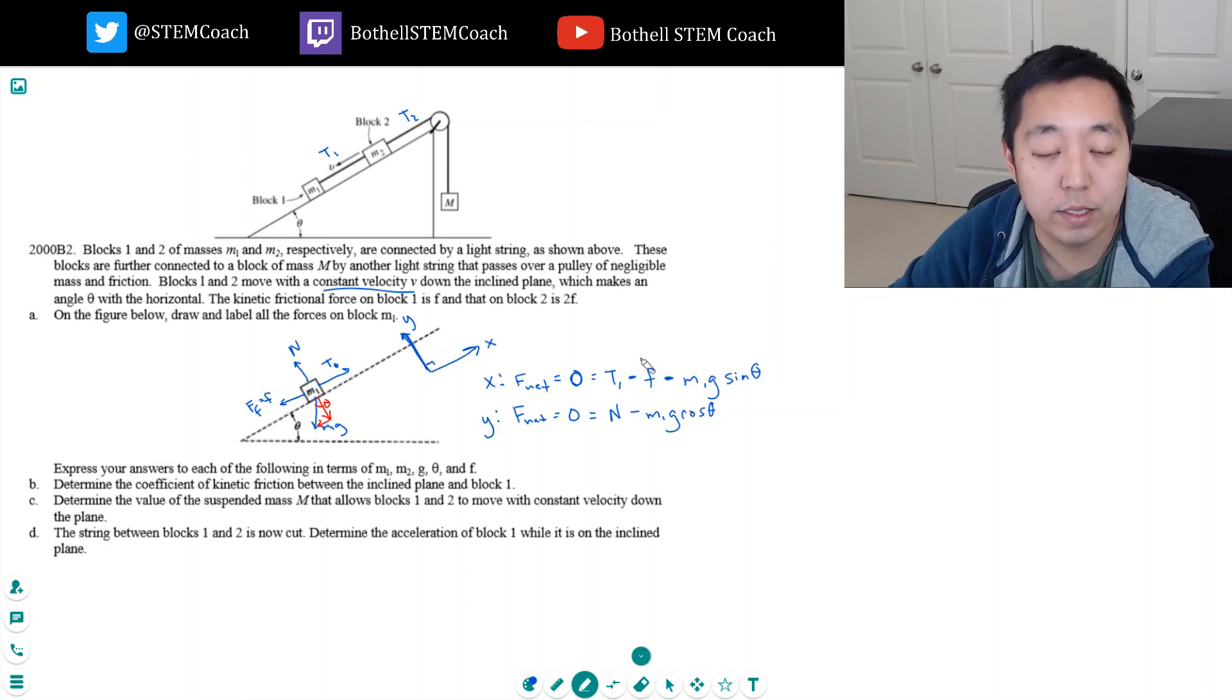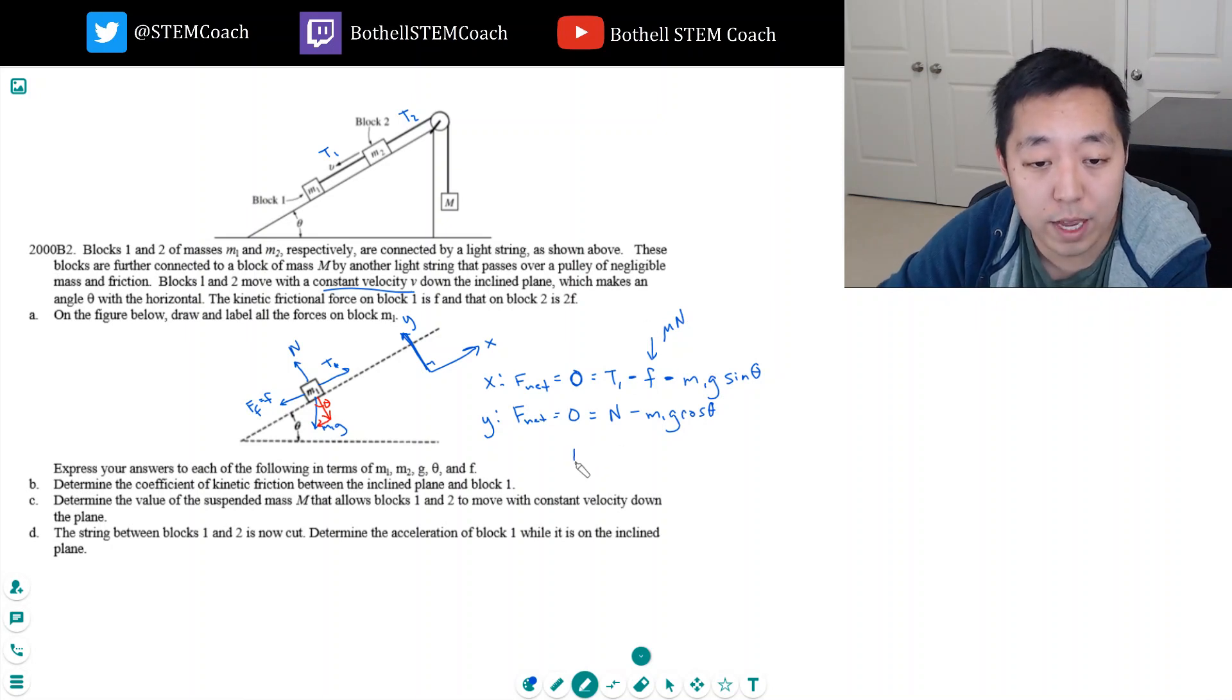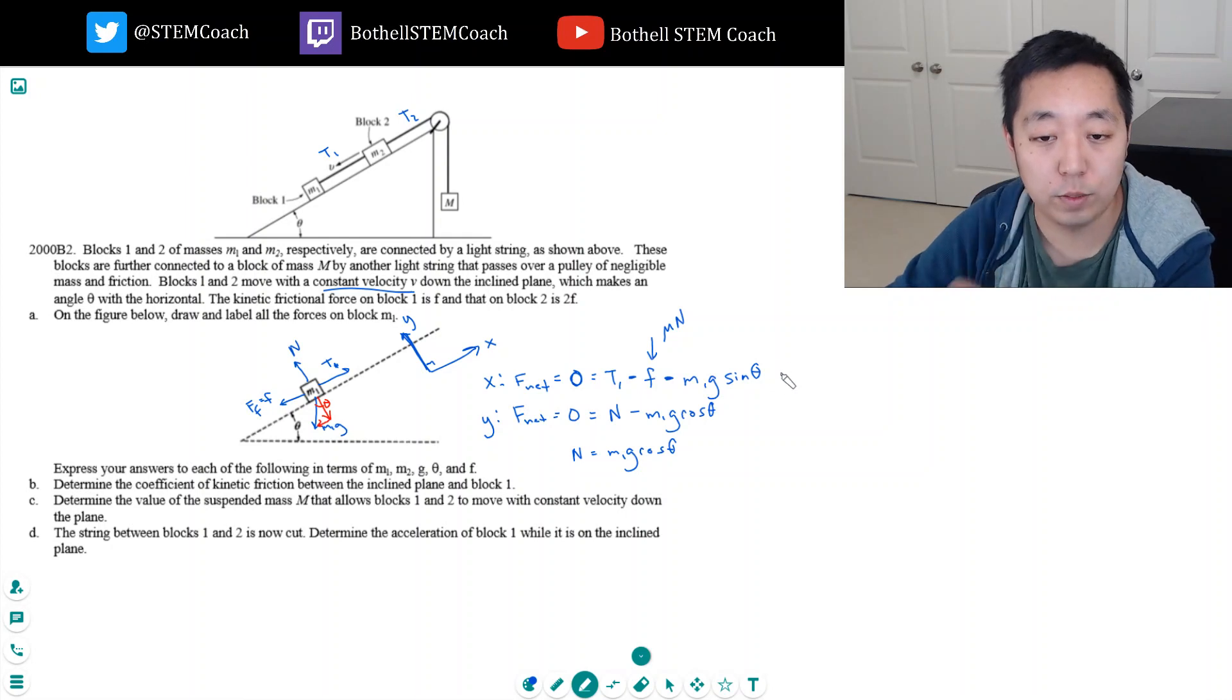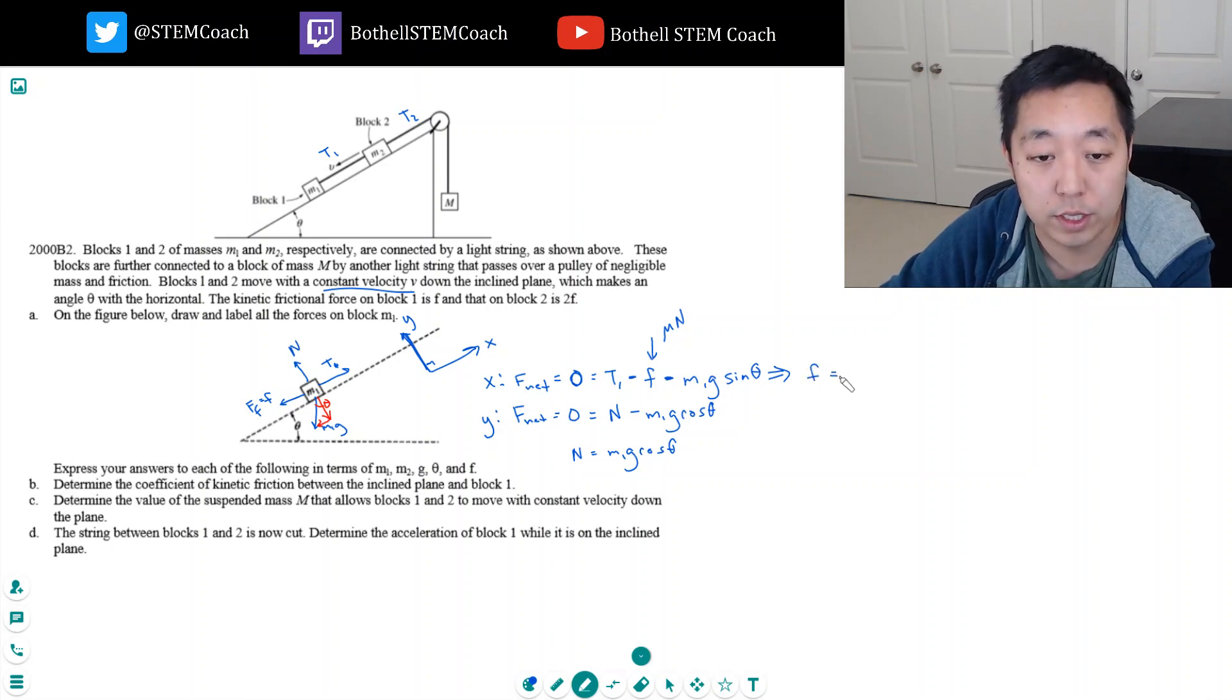Now this little f, what they want us to find is the coefficient of kinetic friction. This little f is equal to M1G cosine theta, right? So if N here is equal to M1G cosine theta, then what I need is this force of friction. What that tells me is the force of friction, like this equation, if I rearrange it, I get the force of friction is equal to T1 minus M1G sine theta.